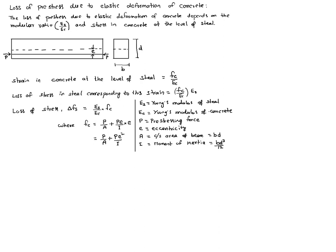So Fc equals P by A plus Pe² by I. The loss of stress delta Fs equals modular ratio, which is Es by Ec, into Fc. If you want to find the percentage loss of stress in steel, percentage loss equals delta Fs divided by Fs, multiplied by 100.